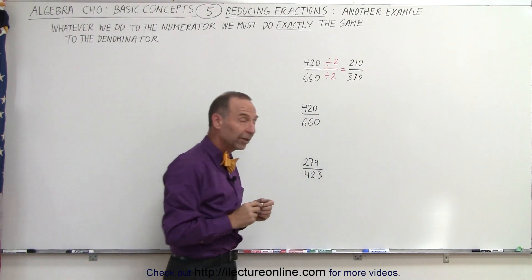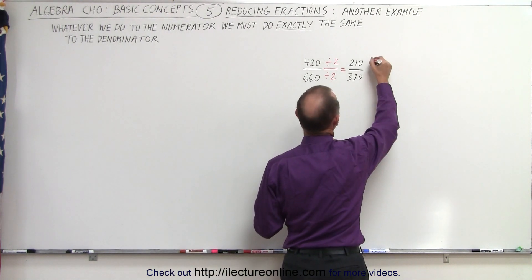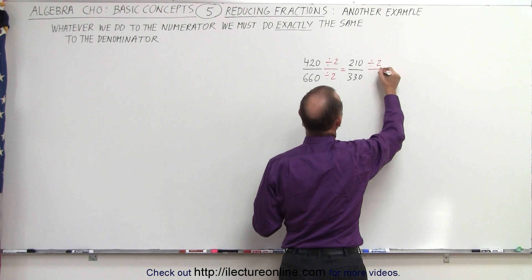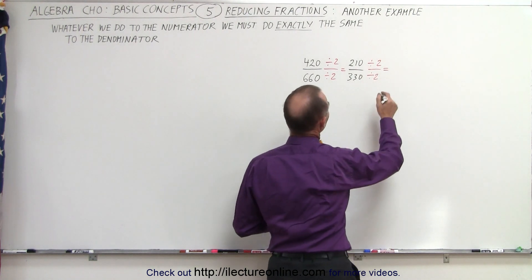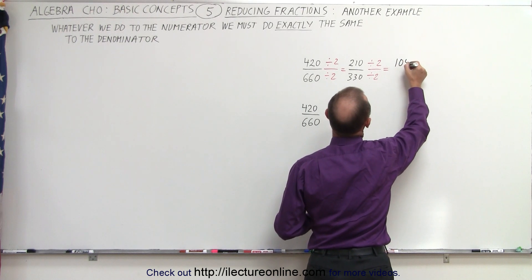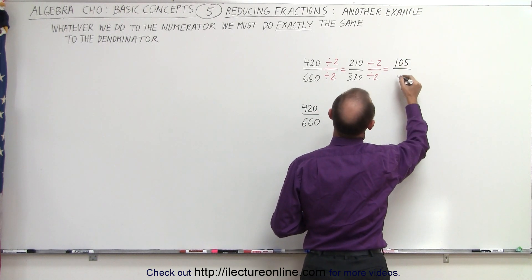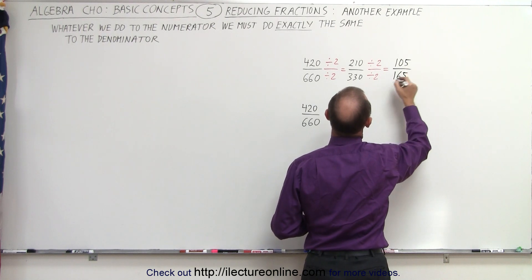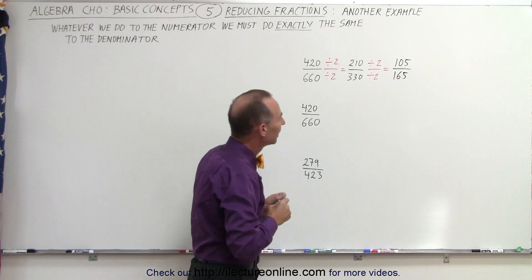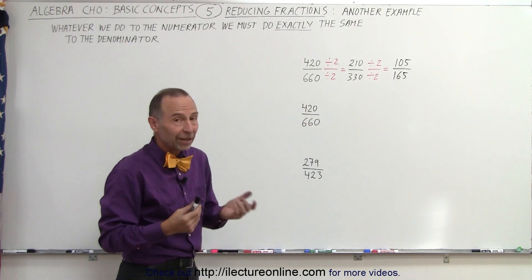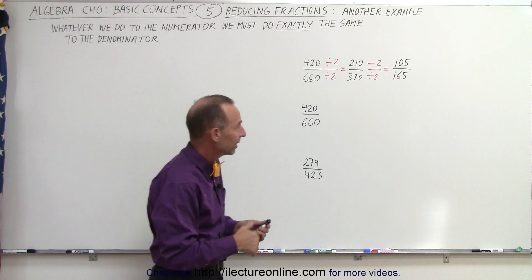Notice both the numerator and the denominator are still even, so we can continue the process and divide by 2 again. When we take 210 divided by 2, we get 105. When we take 330 divided by 2, we get 165. At this point we can no longer divide by 2, so maybe we can divide by 3, the next prime number.